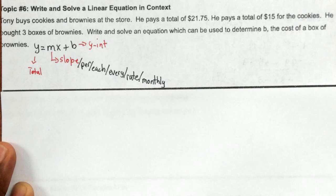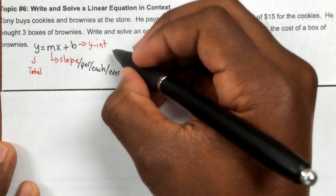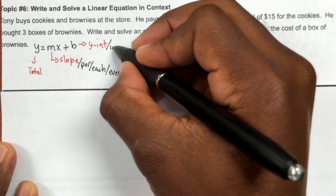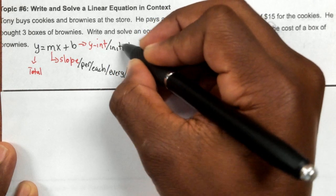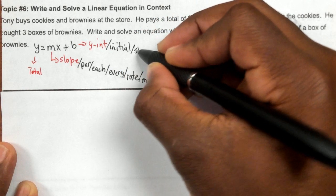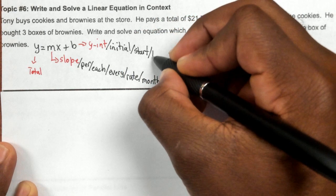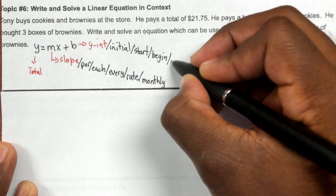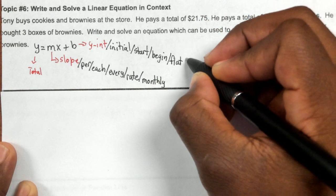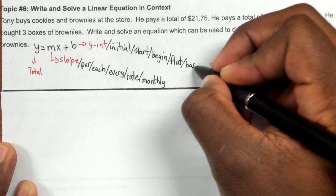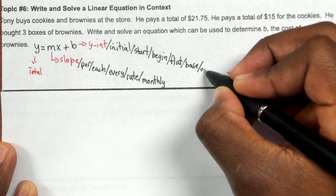Some of the keywords that mean y-intercept are initial, start, begin, flat, base. And I'm going to give you a new one: original.